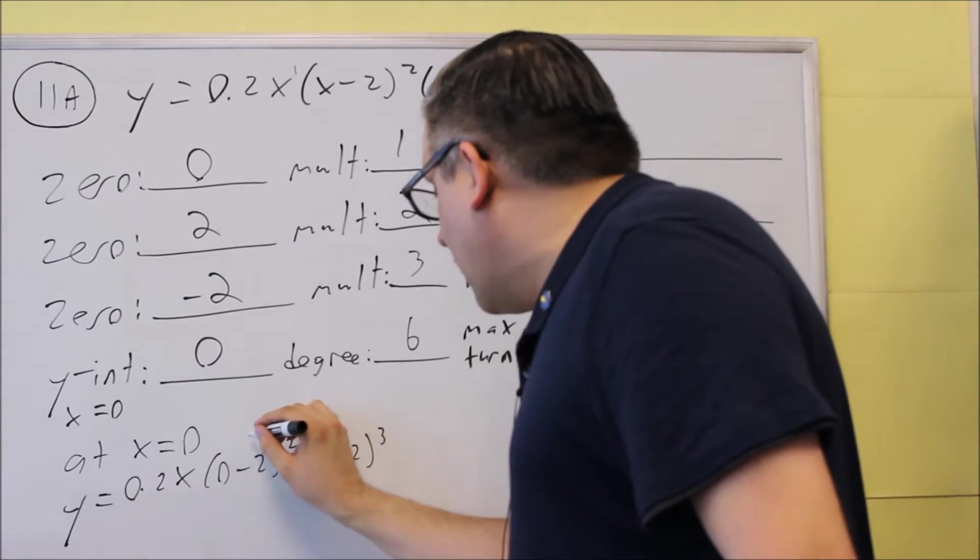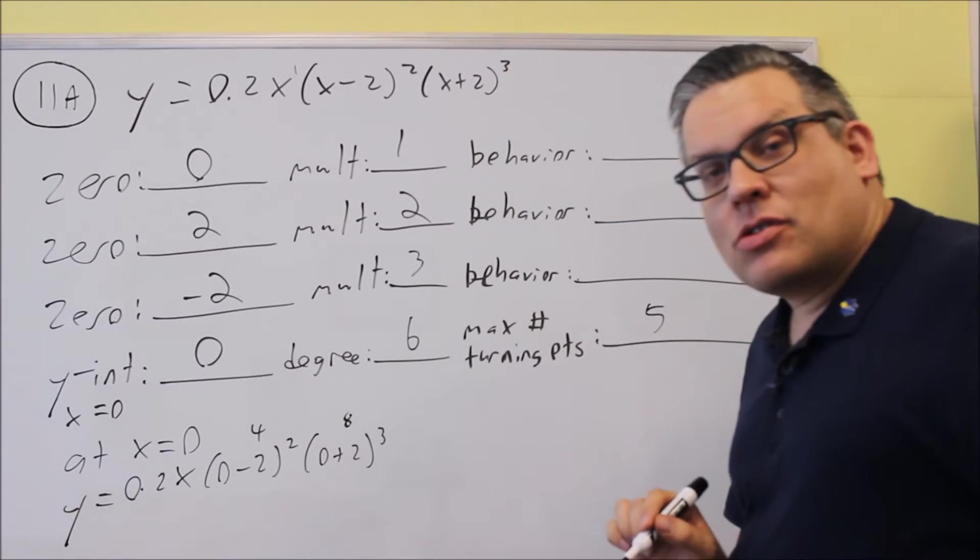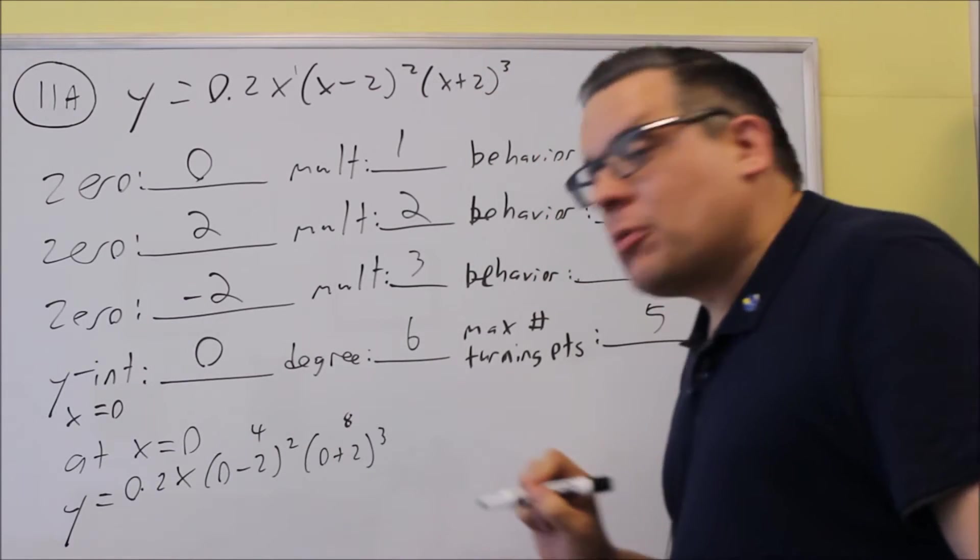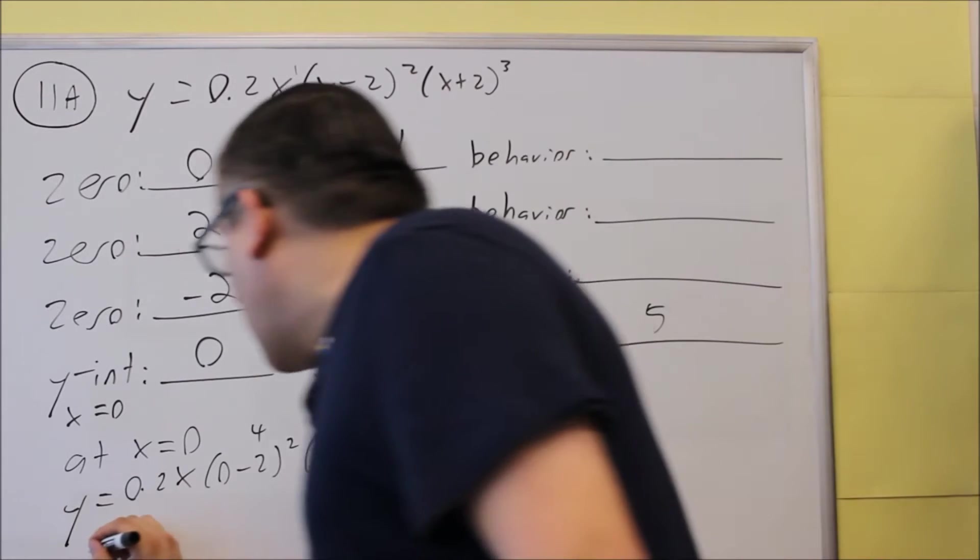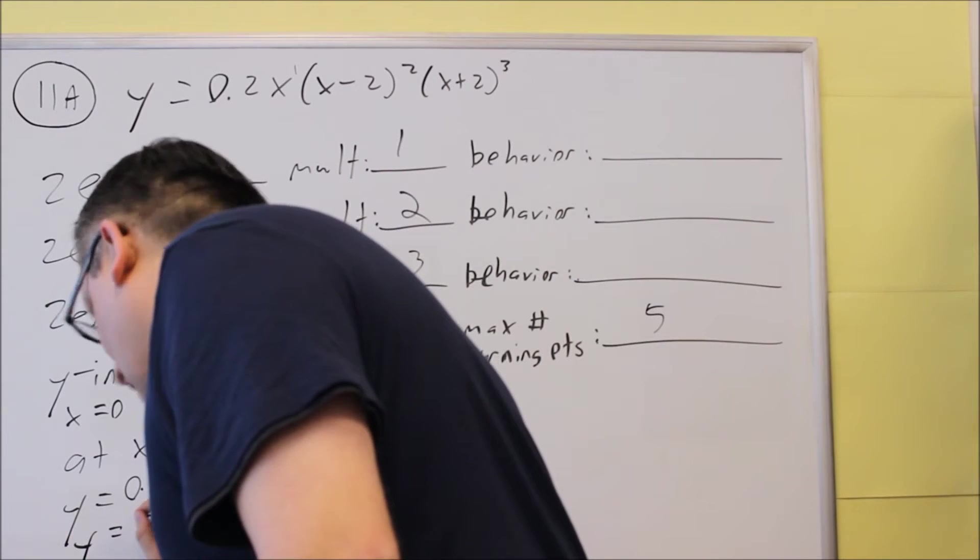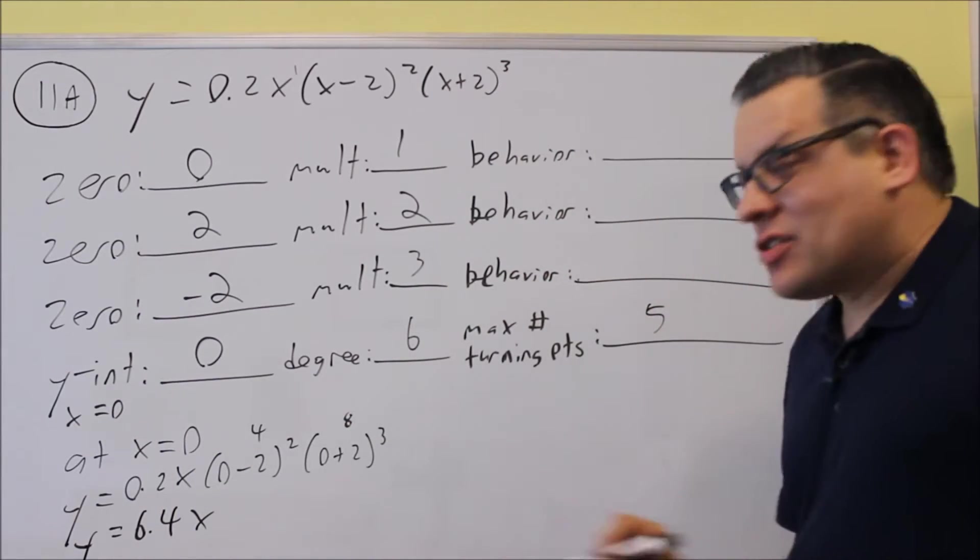Now this part's going to give you a four, and this part's going to give you an eight. You want to take eight and four, multiply it together, and then multiply it by 0.2.